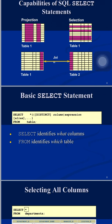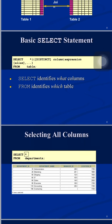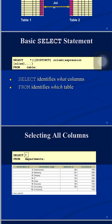Let us discuss selecting all columns. Suppose I have a table called departments and I want to see all columns from it. I write the query: SELECT * FROM departments. The asterisk signifies all columns. If my table has four columns, it will print all four columns in the same sequence as they exist in the database.